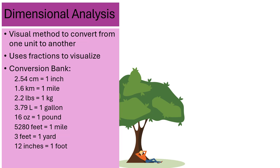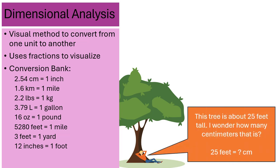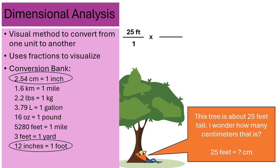A person lying under a tree says this tree is about 25 feet tall — I wonder how many centimeters that is. This problem actually requires not just one conversion but two — there's an extra step. Start with the given number, 25 feet, divided by one. I can now clearly see feet is in the numerator position. In the first dimensional analysis step, I'm going to convert feet to inches because I don't know how many centimeters are in a foot. I put foot on the bottom so they'll cross-cancel, and inches goes in the numerator. There are 12 inches in one foot, so wherever the inch unit is, that's where 12 goes, and the two feet units cancel out.